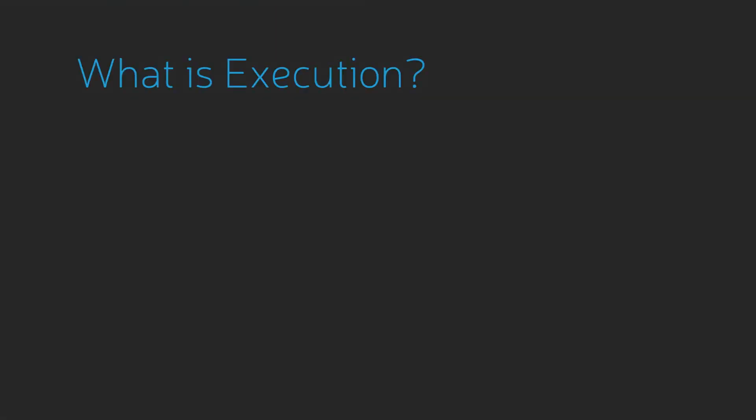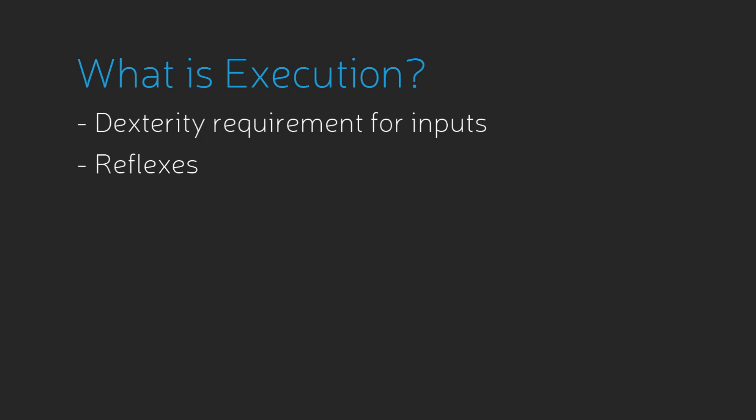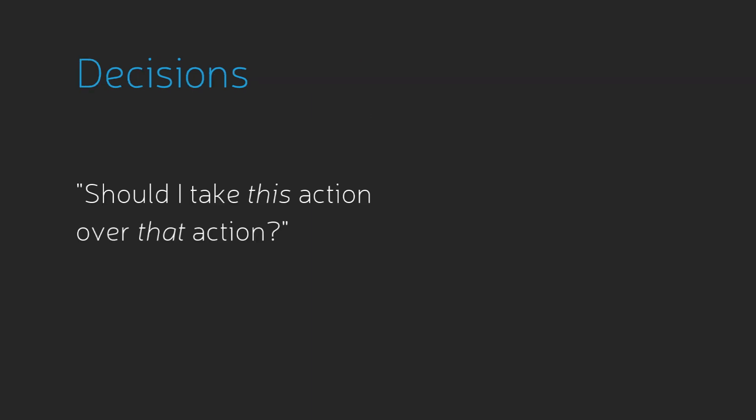Execution usually refers to the existence of a dexterity requirement for making inputs, and can sometimes also refer to reflexes. In either case, execution refers to physical ability, which we can distinguish from things that we would normally consider conscious choices. While decisions refer to the question of should — as in, should I take this action over that action — execution refers to a different question of can.